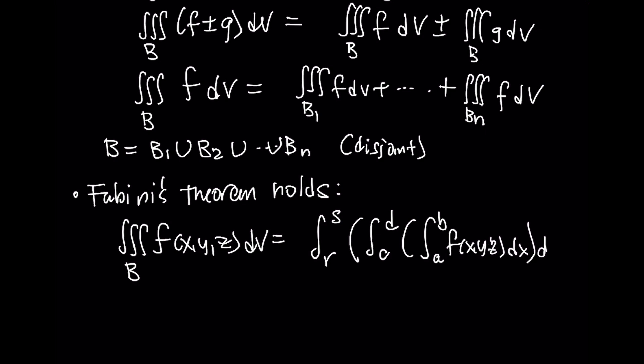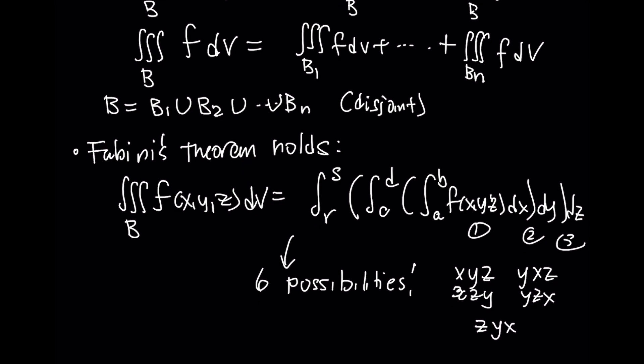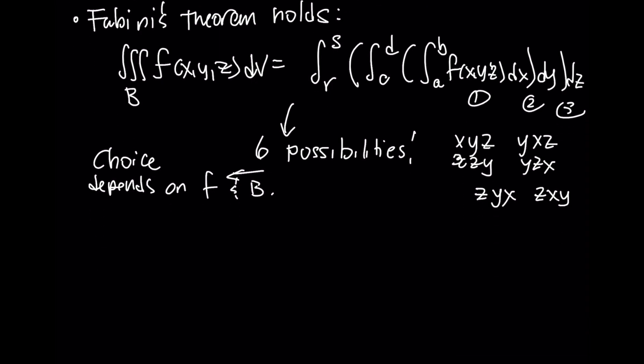Because there are three variables, it turns out that there are six possibilities. You could integrate x, y, z, x, z, y. You could go y, x, z, y, z, x. And finally, you could go z, y, x, z, x, y. Any one of these is going to produce the same value. The choice depends on the problem, depends on the function and on the region that we've chosen.